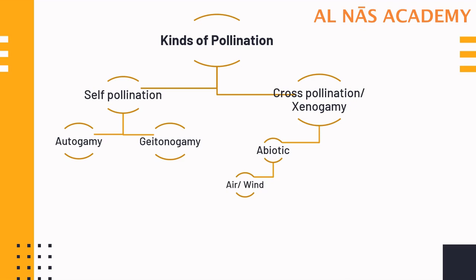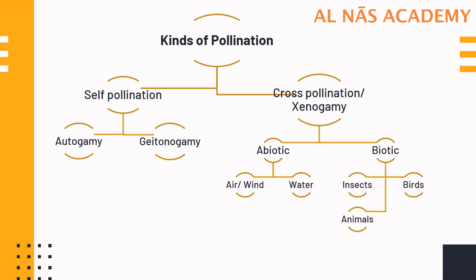The abiotic agencies are air or wind and water — mediums that help the pollen to be transferred from the anther to the stigma. In biotic agencies, the agents are insects, birds, animals, bats, ants, and snails. These are a few of the biotic external agencies.